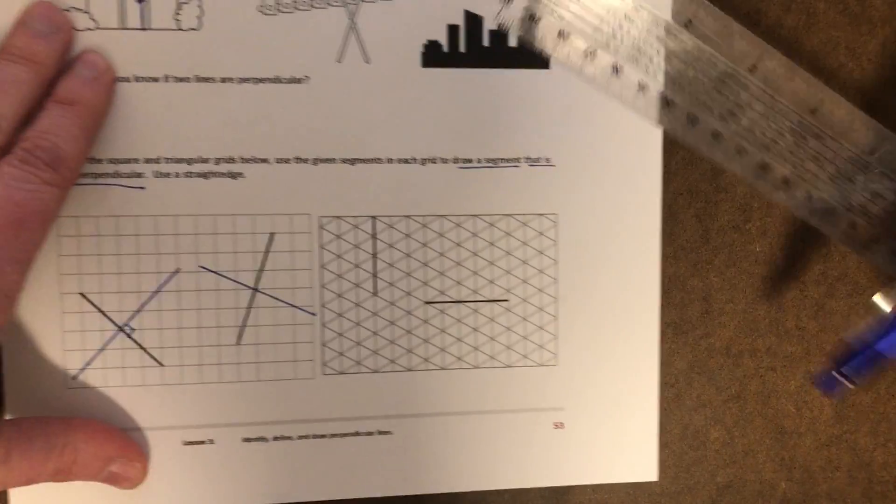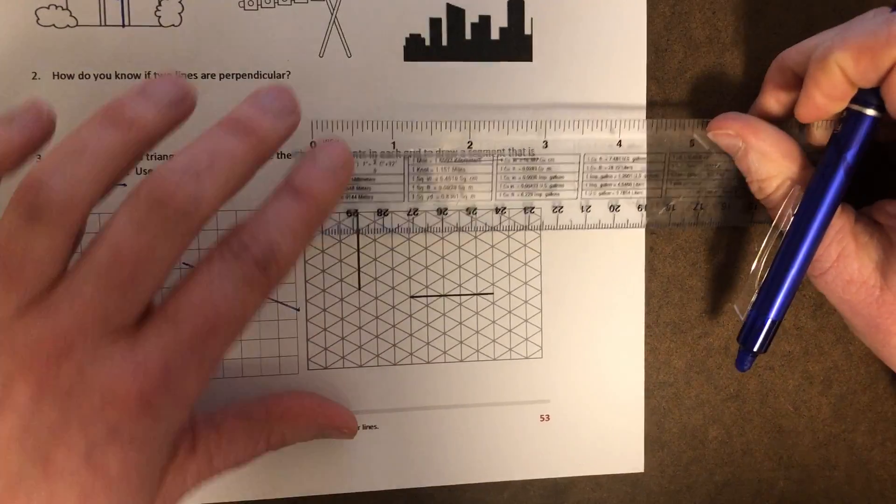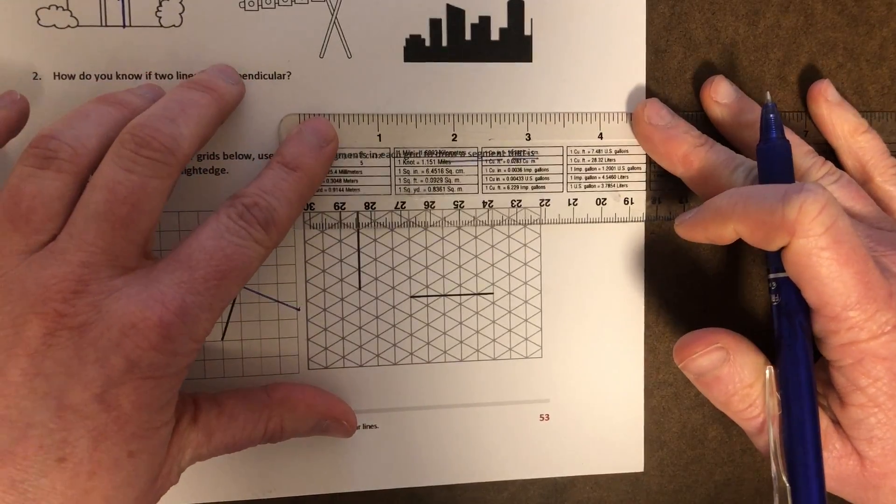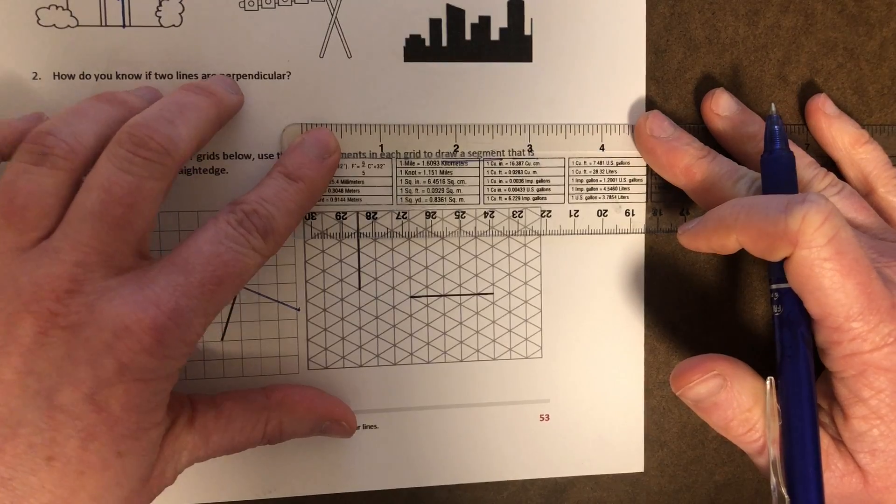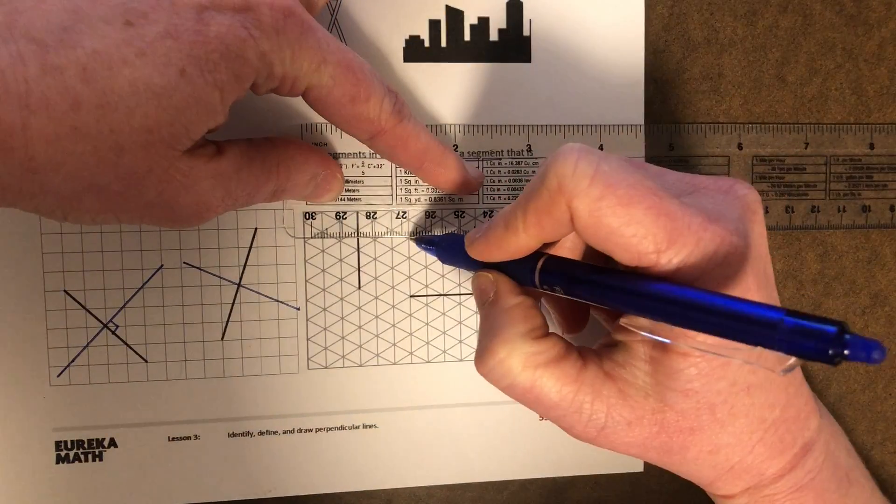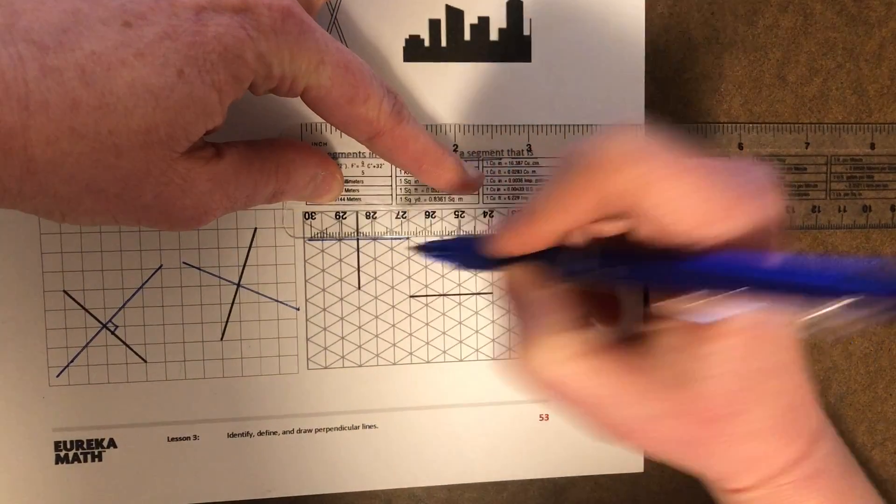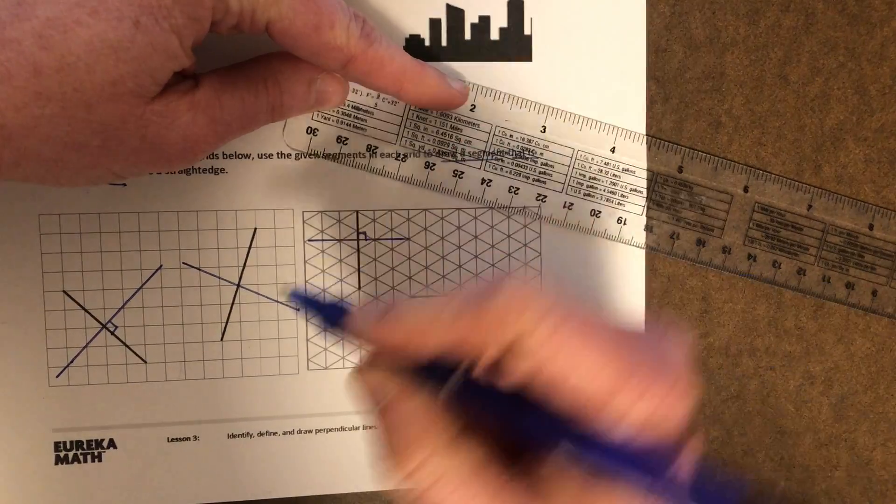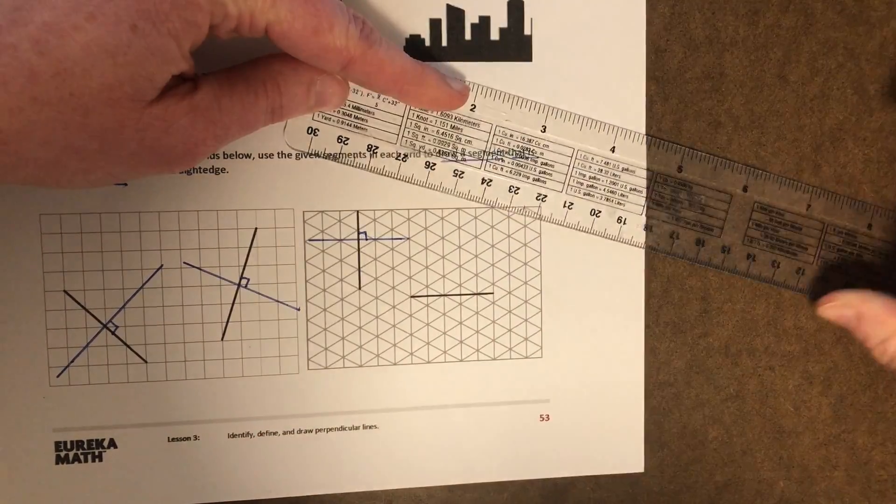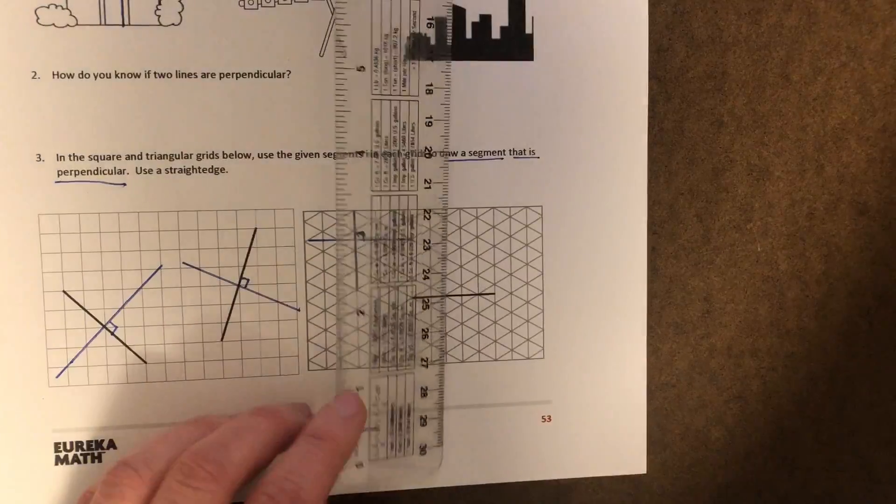And then same over here on these triangle grids. This one is perpendicular, so I'm going to create a perpendicular line segment here. There we go. I've got my little right angle. I forgot to put it here. And then this one is straight up and down.